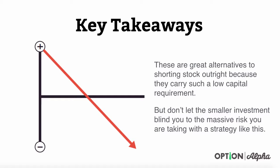Some of the key takeaways are that these are great alternatives to shorting the stock outright because they carry such a low capital requirement. But don't let the smaller investment blind you to the massive risk that you're still taking with this strategy. We're trying to replicate the profit and loss diagram of a short stock position — this doesn't mean that we are taking less risk, it just means that we're using less capital to get into the position. We're leveraging the power of options, but make sure you understand where you can and can't lose money as the stock trades in the future.